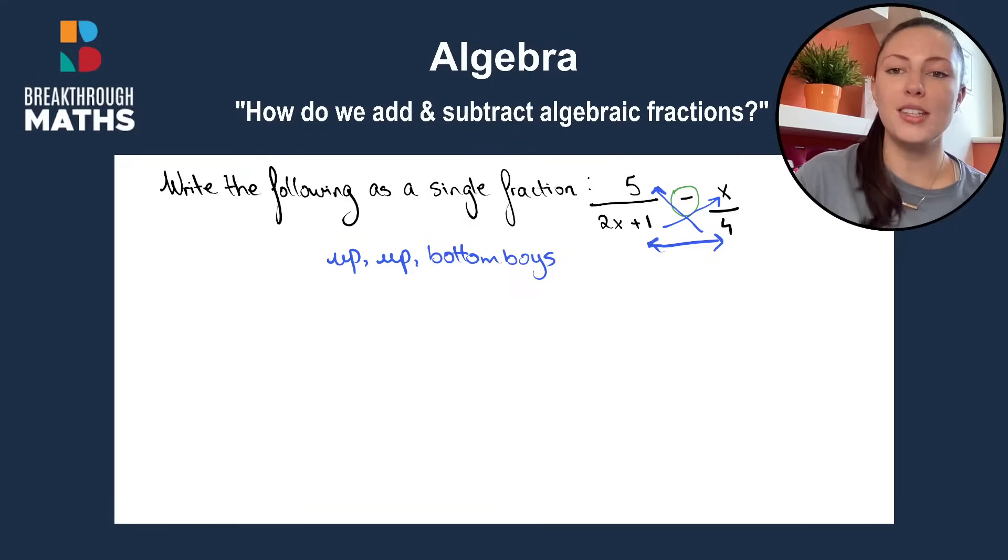And what you do then is you start with the first number in the first fraction, which is five. And then you follow the arrow along and you can see it's connected to four. So we multiply it by four. Then that's our first up arrow done.